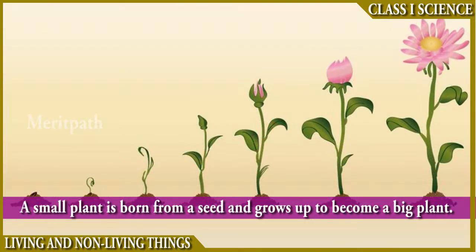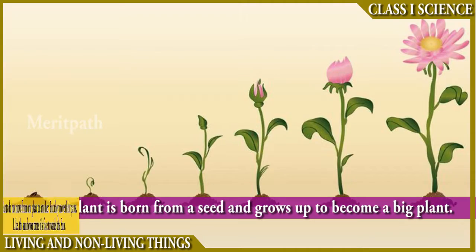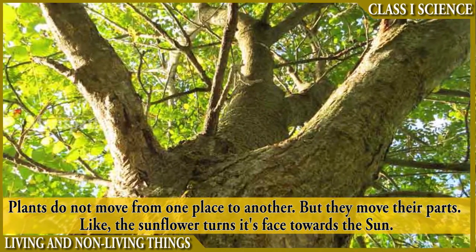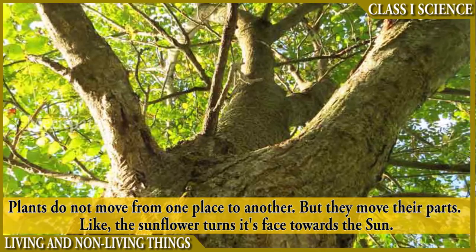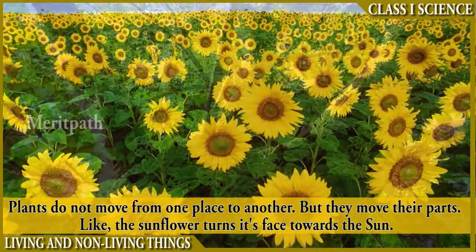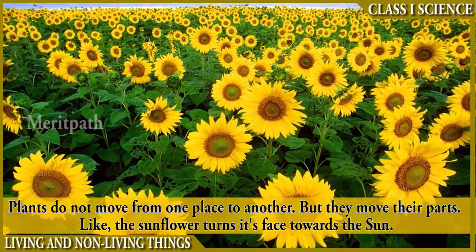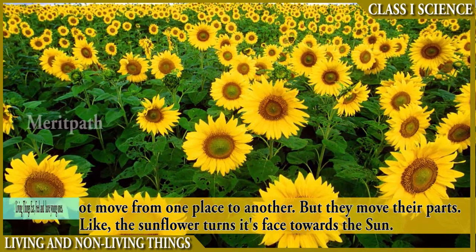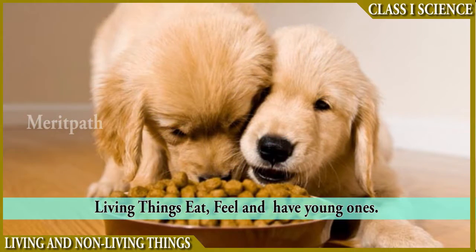A small plant is born from a seed and grows up to become a big plant. Plants cannot move from one place to another, though they can move their parts. An example of such a plant is a sunflower.